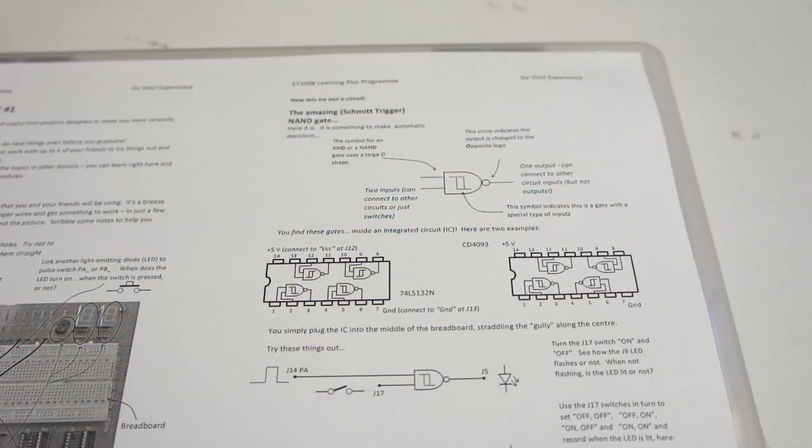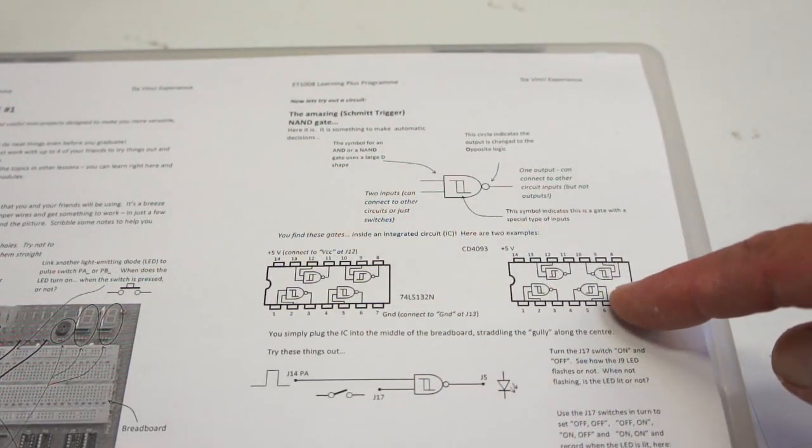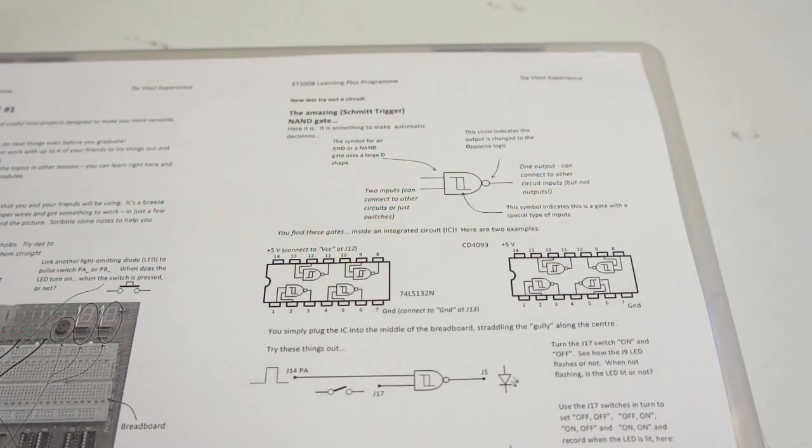Let's look at a NAND gate. This is a special one, a Schmidt trigger NAND gate. It's actually a CMOS one that we're using, but I've shown you the TTL one and the CMOS one. These are two different ways of making logic gates.